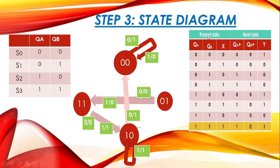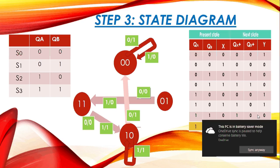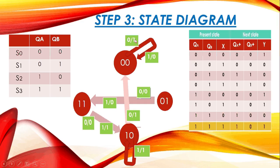The final step is the state diagram. There are four states: S0(00), S1(01), S2(10), and S3(11). For state S0(00): if input X=0, QA+ and QB+ are both 0, so the circuit returns to the same state and output Y=1, giving transition 0/1. If X=1 at state S0(00), we also remain in state 00 with output Y=0.